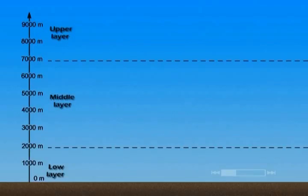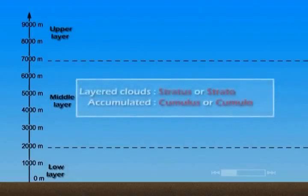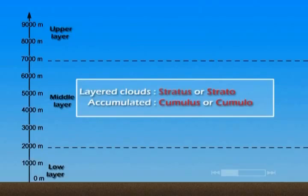The second criterion is the form. Two main cloud forms are distinguishable: layered clouds, which are referred to using the word stratus or strato, and accumulated clouds, the word cumulus and cumulo being used for them.